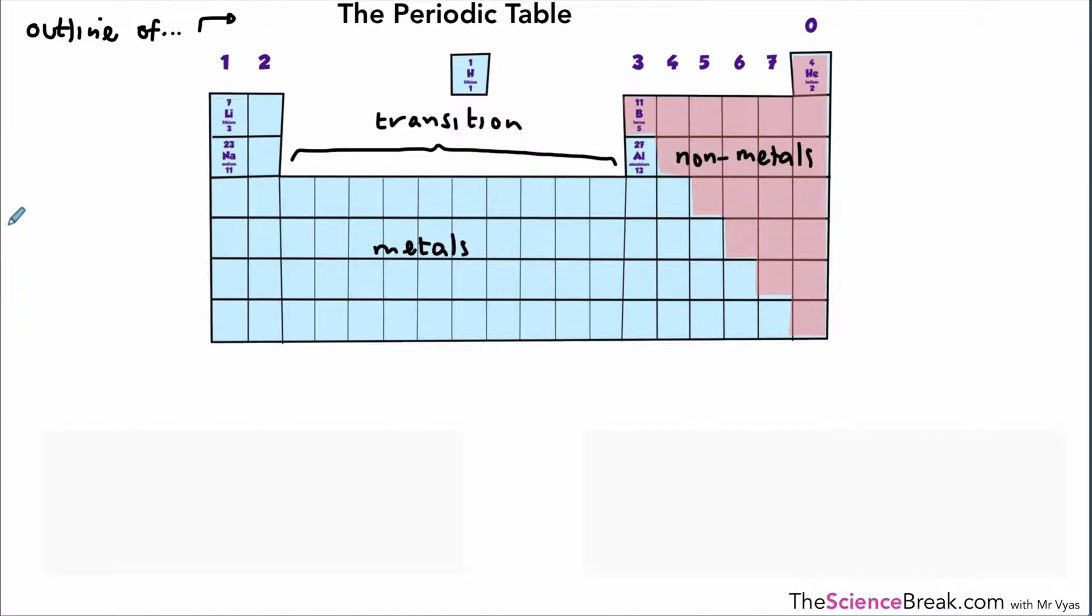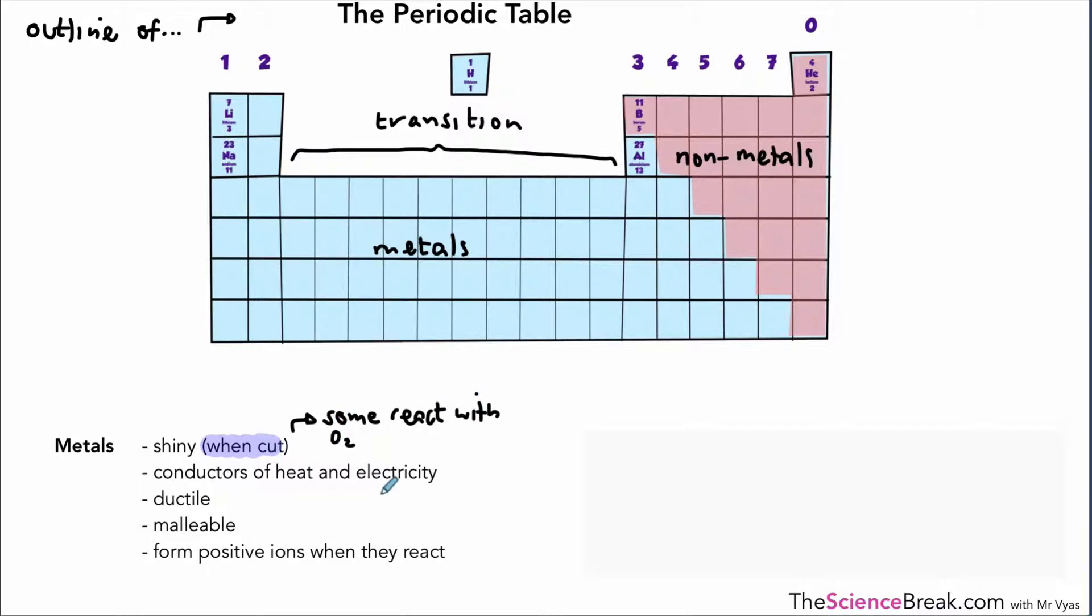We need to know the properties of metals, so here is a list of those properties. Metals are shiny when cut. We often add that detail about being cut because some metals will react with oxygen in the air and that will cause them to lose their shine. Some metals react and get a layer of oxidation on their surface and lose their shine, so we add the 'when cut' detail.